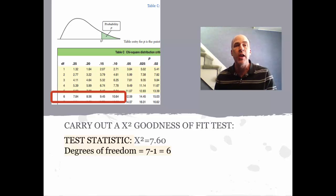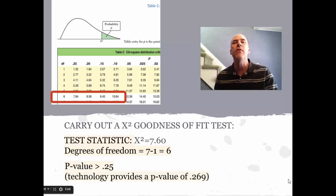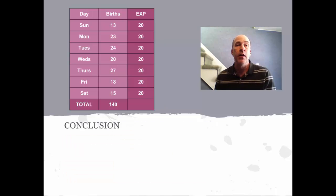You can see here that 7.60 would lie before the lowest p-value, which is 0.25. So all I know and all I really need to know is that the p-value is greater than 0.25. Now, down the road we will use technology for this. Technology will provide a p-value of 0.269.